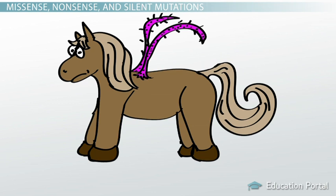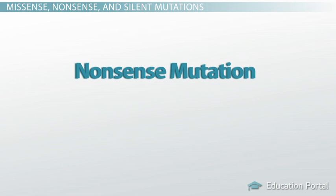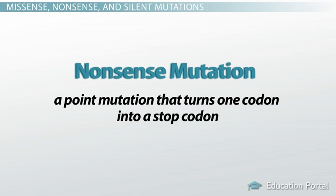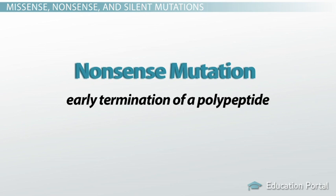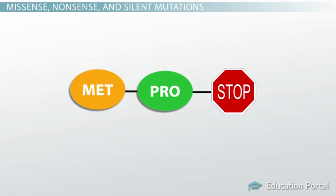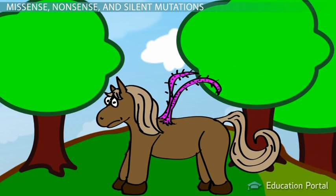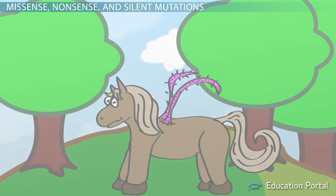Our pink-winged pony will have to go featherless. This type of mutation is called a nonsense mutation — a point mutation that turns one codon into a stop codon. Nonsense mutations always result in the early termination of a polypeptide. In other words, the chain stops short and the protein is never completed. Our pony doesn't get any feathers and he'll never be able to fly.